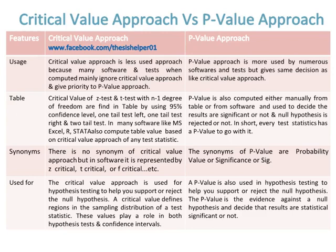The critical value approach is used for hypothesis testing to help you support or reject the null hypothesis. A critical value defines regions in the sampling distribution of a test statistic and plays a role in both hypothesis tests and confidence intervals. Similarly, a p-value is also used in hypothesis testing to help support or reject the null hypothesis — it is the evidence against the null hypothesis and indicates whether results are statistically significant.